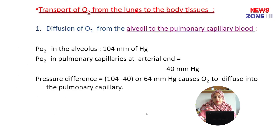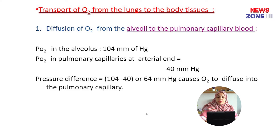Now I will elaborately discuss the transport of oxygen from the lungs to the body tissue. First, the diffusion of oxygen from the alveoli to the pulmonary capillary blood. The partial pressure of oxygen in the alveolus is 104 mmHg and in the pulmonary capillaries at the arterial end is 40 mmHg. So the pressure difference is 64 mmHg, which causes oxygen to diffuse into the pulmonary capillary blood.